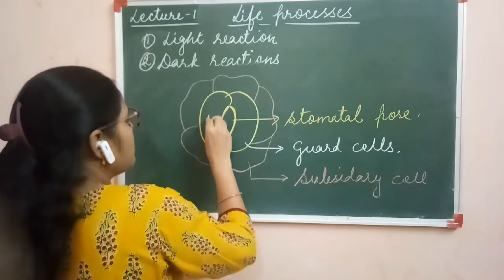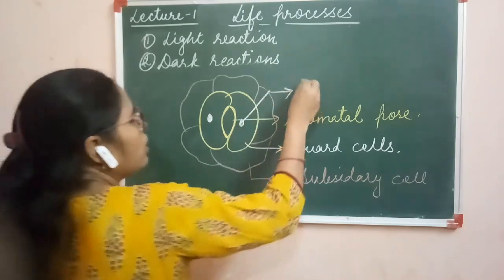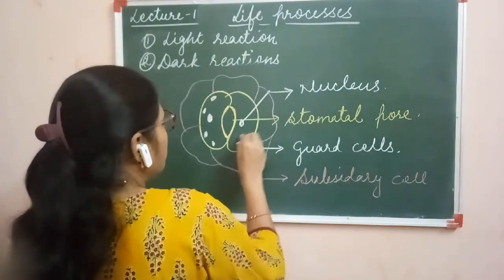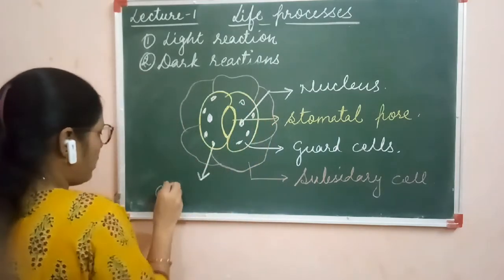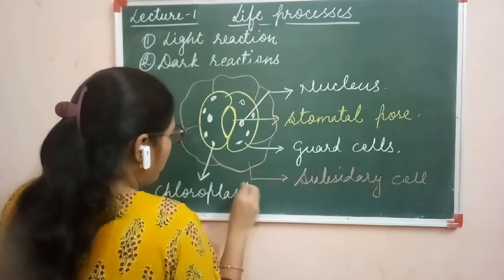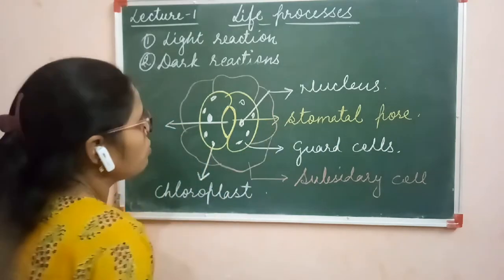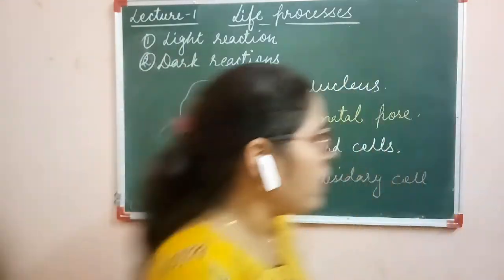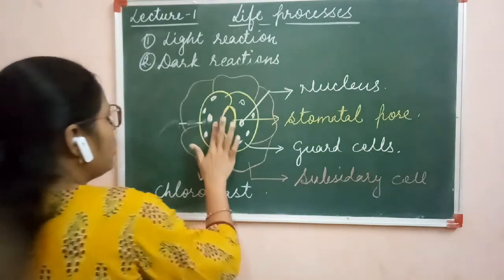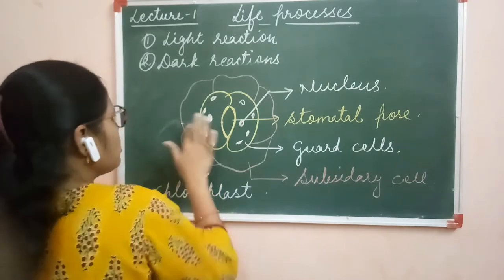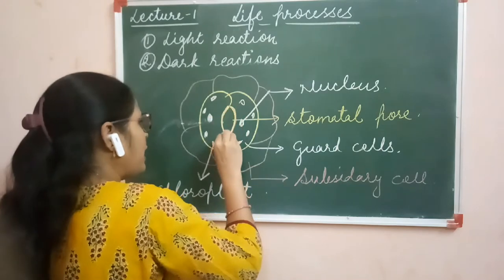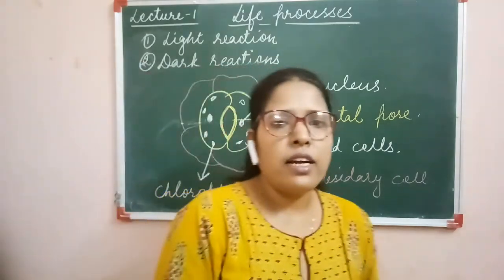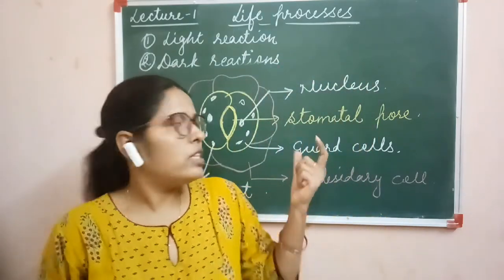The guard cells contain their nucleus and also contain chloroplast — this is the stomatal chloroplast. The center is the stomatal pore. The wall of the guard cell which faces the stomatal pore is comparatively thicker than the opposite side — the outer wall is thin and the stomatal pore side wall is thicker. So this is the structure of stomata.